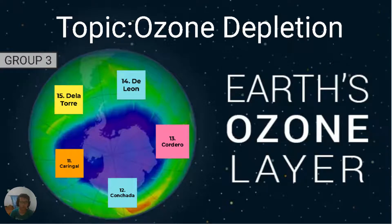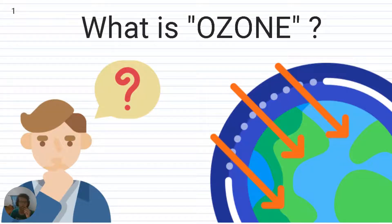Topic: ozone depletion. What is ozone? Ozone is a colorless, odorless, reactive gas comprised of three oxygen atoms. It is found naturally in the Earth's stratosphere, where it absorbs the ultraviolet component of incoming solar radiation that could be harmful to life on Earth.